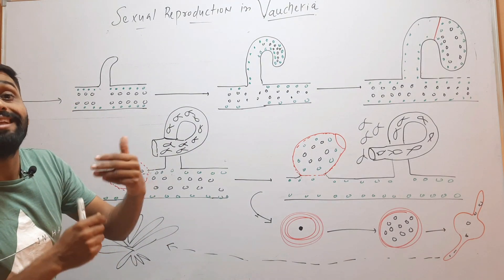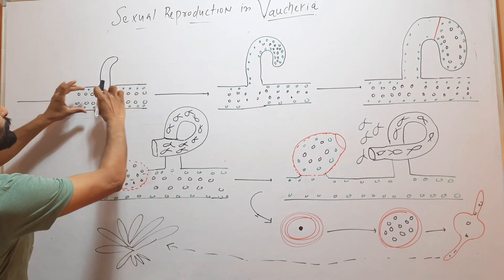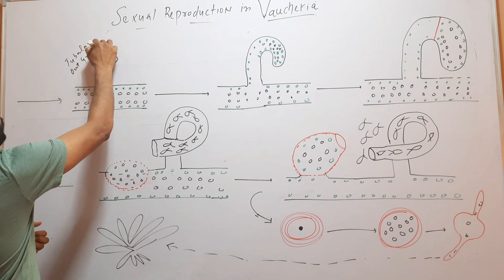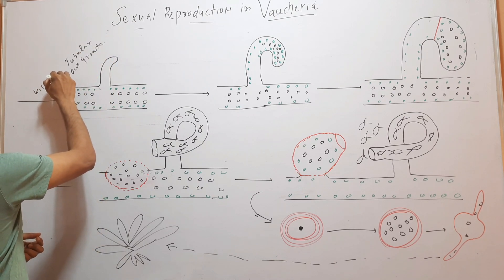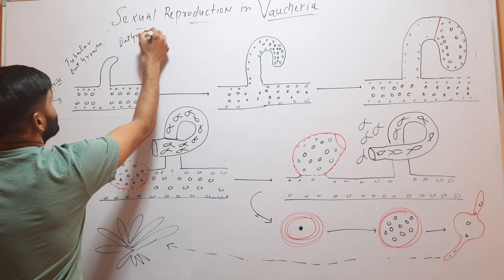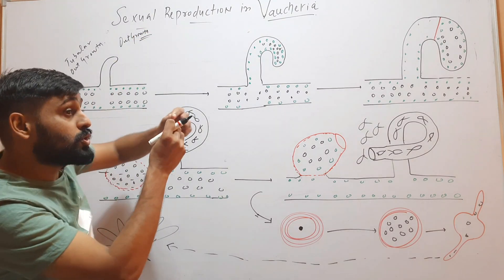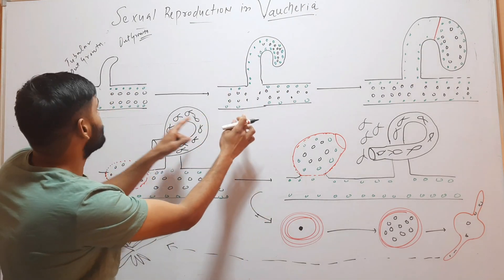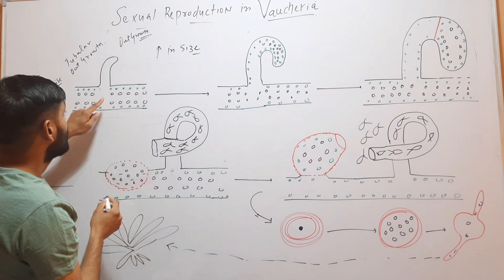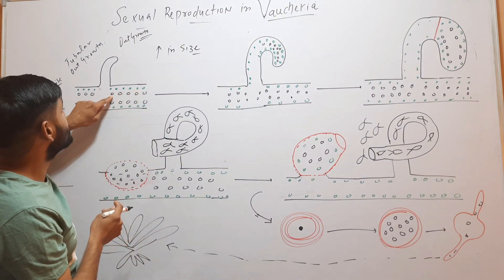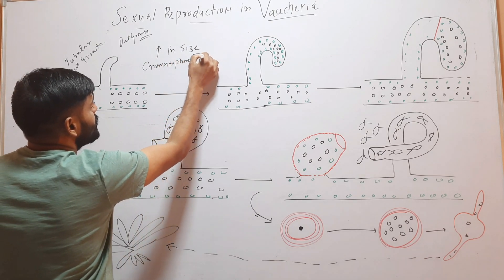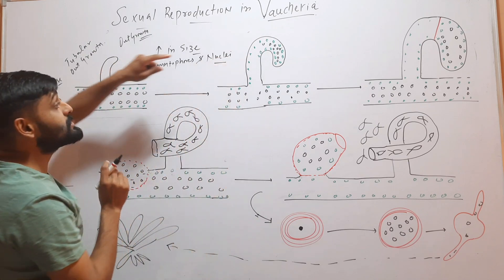First, we will talk about the development of Antheridia, the male reproductive structure. On any filament of the thallus, a small tubular outgrowth will arise. When this tubular outgrowth arises, it will increase in size. The green colored structures are chromatophores and the black colored structures are nuclei. Chromatophores and nuclei will migrate into this tubular structure as it grows.